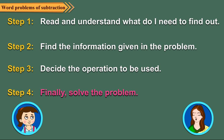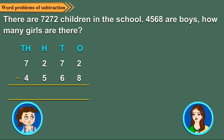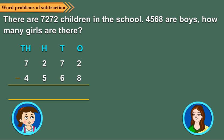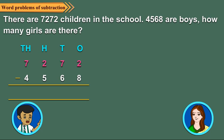Okay children, now take an example. Children, first read the problem carefully and tell me, what do we need to find out? Teacher, here we have to find out the number of girls. The total number of students is 7,272 and the number of boys is 4,568.